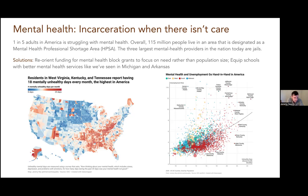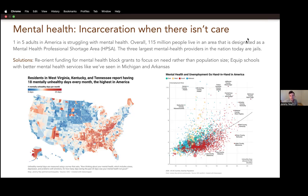On the solution side, there has proven to be some efficacy shown around how mental health block grants can be used to focus on need instead of just population size. We have this data where people are telling us they are struggling with mental issues, but right now we really allocate funding based off of just total number of people in an area. Second is trying to equip schools with better mental health services — about half of all mental health issues will develop basically before a person is 15 or so. Michigan and Arkansas are two shining examples where they were able to provide better mental health services in schools.